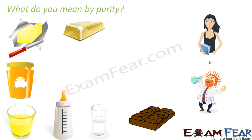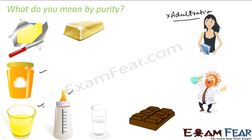Now the question is about purity. For a common man, purity means something which has no adulteration. When you talk about pure milk, you're looking for milk without any adulteration. Talking about pure honey — honey without adulteration. Pure juice — juice without adulteration. When I talk about pure gold, I'm looking for 24-karat gold without any adulteration.